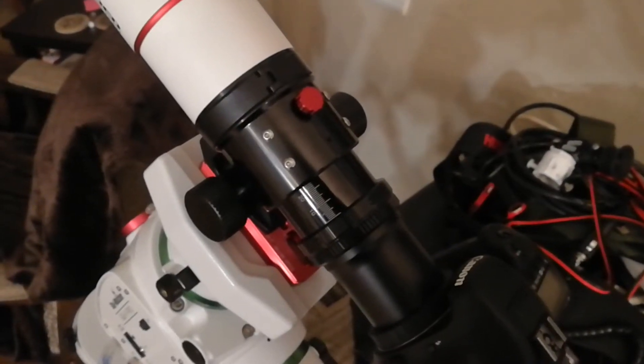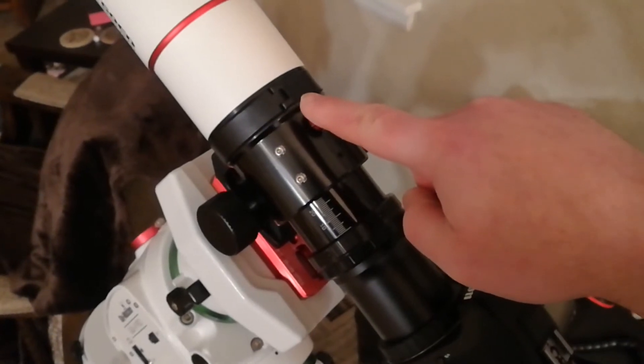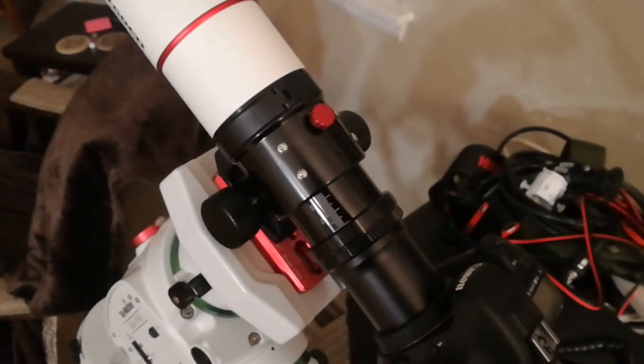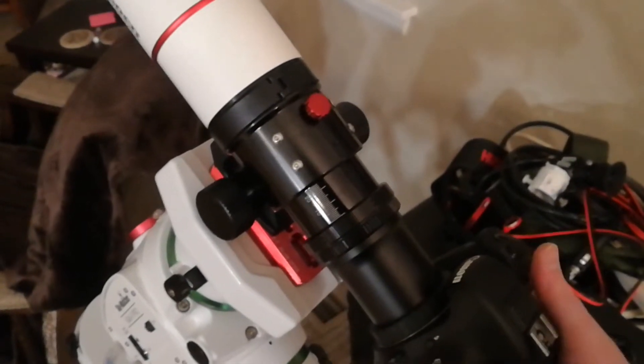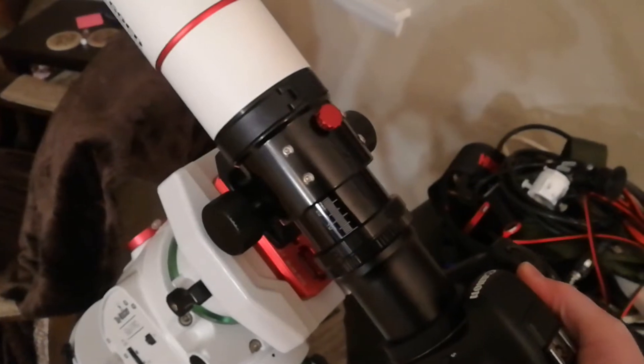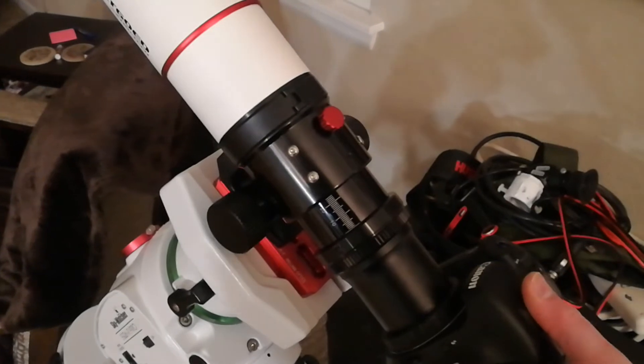Just a quick video to show how loose this clamp is for the Astratech AT60ED telescope. If I grab this camera—I don't know if you can see that wiggling—but I'm not really putting a whole lot of force on it.